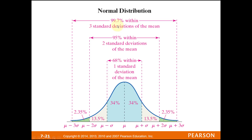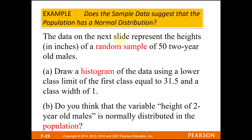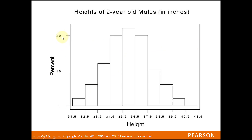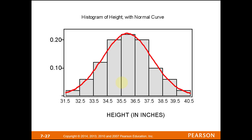Whenever we have a sample, we can make a histogram of the sample data. If that histogram looks bell-shaped and symmetric, we say the data probably came from a population with a normal distribution. For example, looking at heights of 52-year-old males, here are the numbers and their histogram. Because the histogram is relatively bell-shaped and symmetric, we can reasonably assume — not prove — that the heights of children in the general population follow a normal distribution.